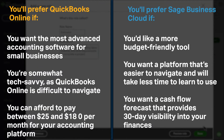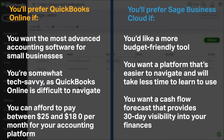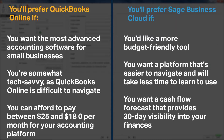Here are a few brief points summarizing who we recommend each tool for. You'll prefer QuickBooks Online if you want the most advanced accounting software for your business, you're somewhat tech savvy as QuickBooks Online is difficult to navigate, and you can afford to pay between $25 to $180 per month. You'll prefer Sage Business Cloud if you'd like a more budget-friendly tool, you want a platform that's easier to navigate and will take less time to learn, and you'll want a cash flow forecast that provides 30-day visibility into your finances.